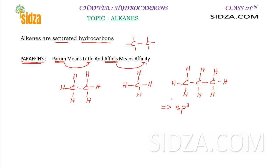Each carbon in alkanes is actually sp3 hybridized. So the hybridization here is sp3. That means each carbon atom in alkanes will have a tetrahedral shape, because from sp3 hybridization you get an sp3 hybridized carbon atom, and therefore the shape will be tetrahedral.